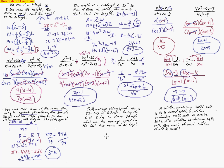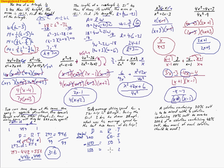The next problem talks about Ted's average driving speed for a five-hour trip at 60 miles per hour. Multiplying those gives 300 miles total distance. For the next three hours he drove at 50 miles per hour, covering 150 miles. Subtracting tells us how far he still has to go on the remaining two hours. Doing that division, he had to go 75 miles per hour those final two hours.